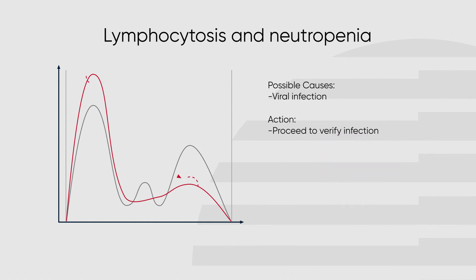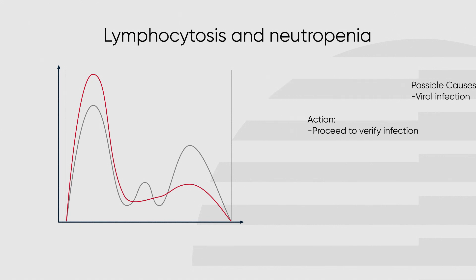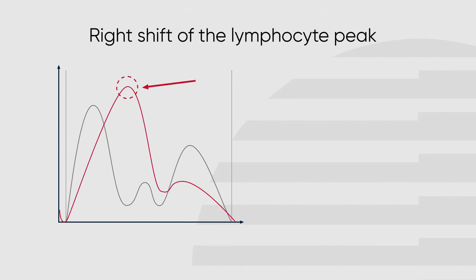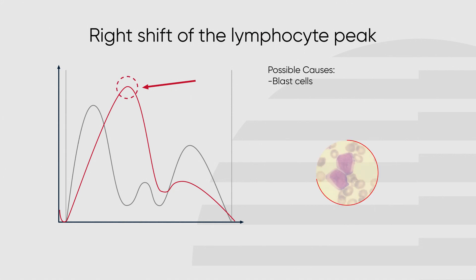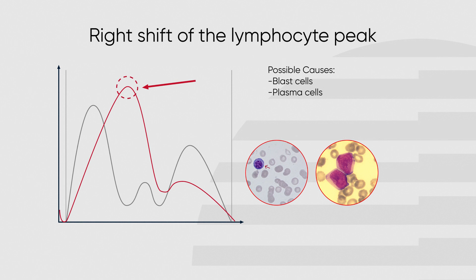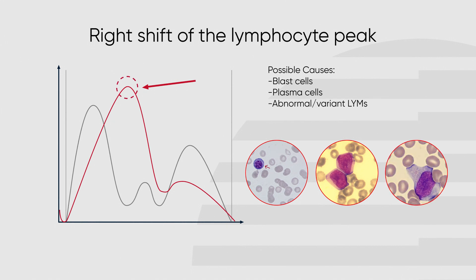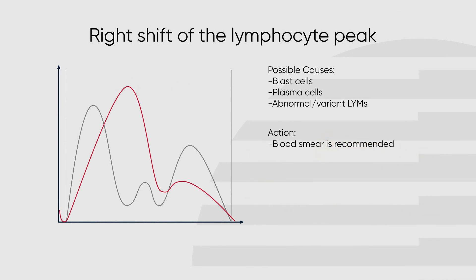A right shift of the lymphocyte peak masking the valley between lymphocytes and mid cells could have several possible causes, such as blast cells, plasma cells, or abnormal/variant lymphocytes. The high increase of mid cells or abnormal cells causes the peaks of the lymphocyte and mid cell populations to merge, and the analyzer is unable to distinguish between them. If this occurs, the instrument may show a DE flag; proceed to confirm the abnormality in smear.